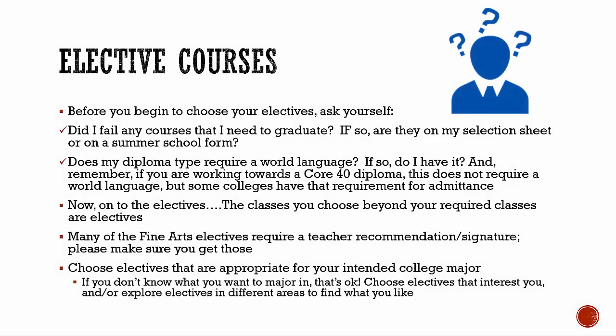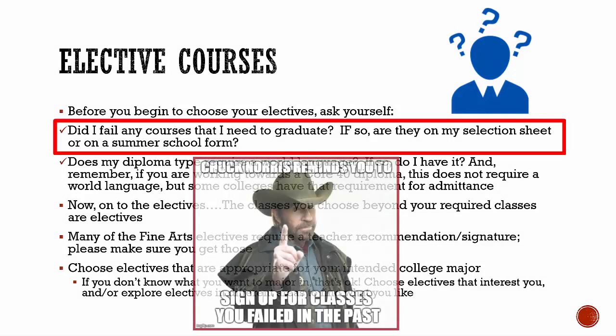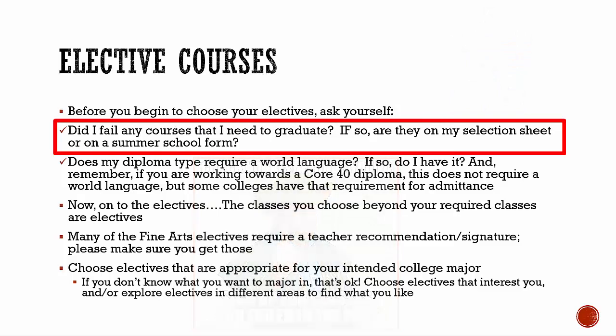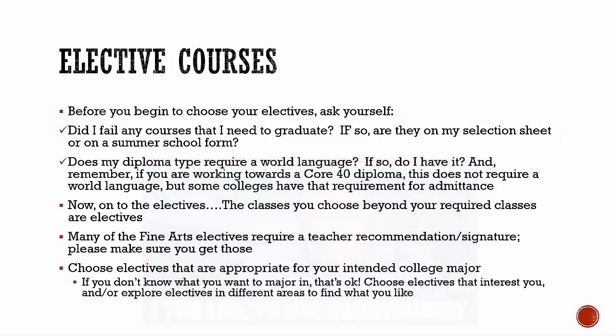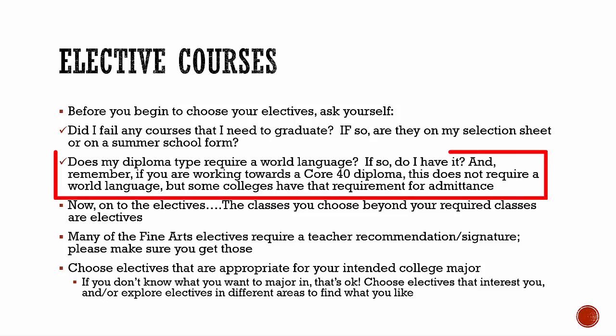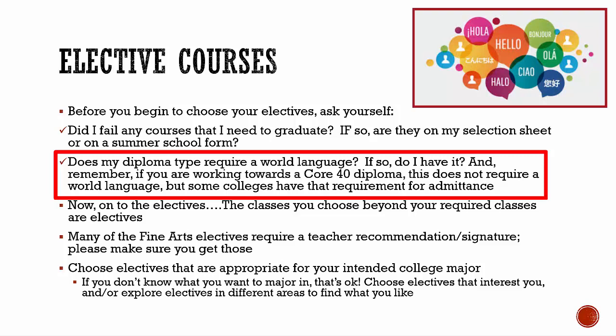Before you begin to choose your electives, ask yourself: did you fail any courses? If you did, our first recommendation would be to make up the failed class during summer school. If you do not retake failed courses during summer school, you will need to make those failed classes part of your senior year course selections. Does your diploma require a world language? If you are on track for an Academic Honors diploma, you need at least three years of a world language or two years of one language and two years of another. A world language is not required for a Core 40 diploma, but we recommend two years as many colleges would like to see that on a high school transcript.